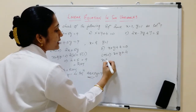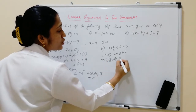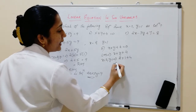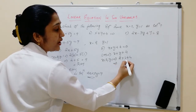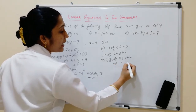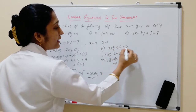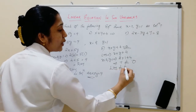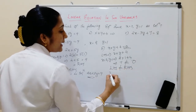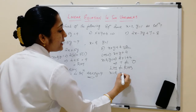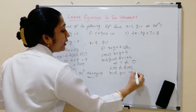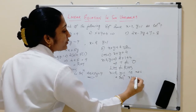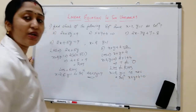Substituting X equal to 2 and Y equal to 1 into X plus Y plus 4, we get 2 plus 1 plus 4. That gives 3 plus 4, which equals 7. But RHS is 0. Since 7 is not equal to 0, LHS is not equal to RHS. Therefore, X equal to 2 and Y equal to 1 is not a solution of the equation X plus Y plus 4 equal to 0.